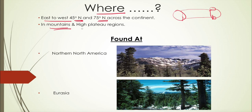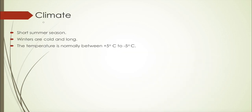Needle leaf forests are mainly found on hills and some plateau regions — not very high mountains. They are predominantly found in the northern part of North America and in Eurasia, meaning parts of both Europe and Asia.